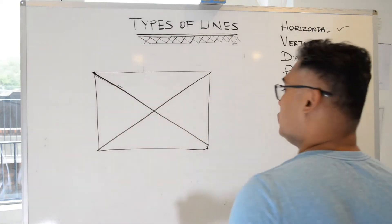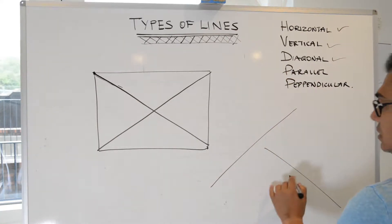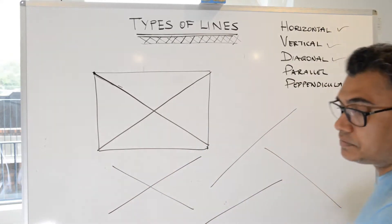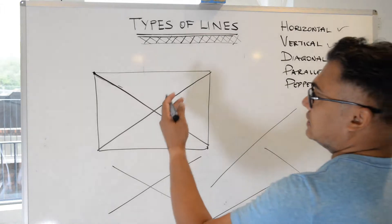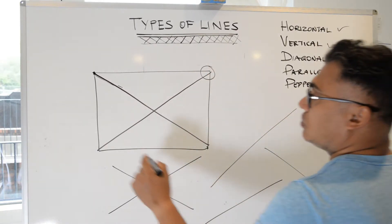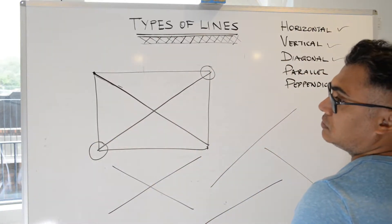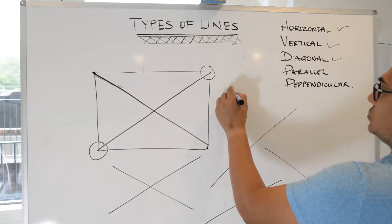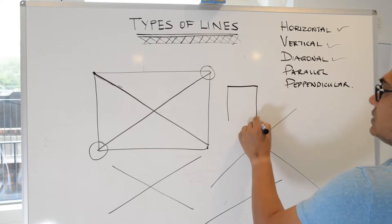Now if we're not using a shape, diagonal lines just run across like that — they run in different angles. So that could be a diagonal. Those are diagonal lines — they run from one corner to another corner.